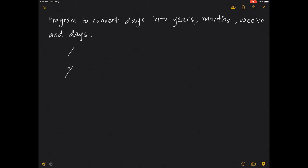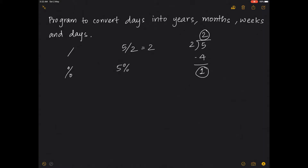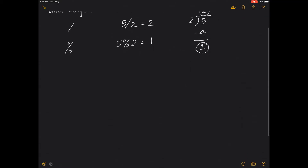Let's say I want to divide 5 by 2 — both are integers. Two goes two times with four, and I get a remainder of one. The quotient you get on top is the value of the division, and the remainder at the bottom is the value of the modulus. We are going to use these two operations in the conversion.